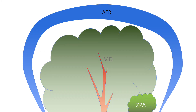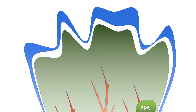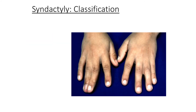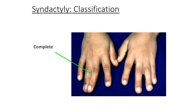Let's get back to the hand paddle. Normally you have four cleavage sites, which leads to four web spaces. But if you only have three cleavage sites, you're one web space short. You still have apoptosis, but the fingers do not separate in that central area — wherever that AER happened not to cleave. The classification of syndactyly is fairly straightforward: simple (soft tissue only), complex (where the distal phalangeal tufts are joined), incomplete, and complete.